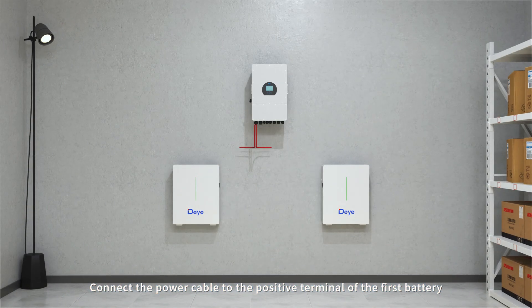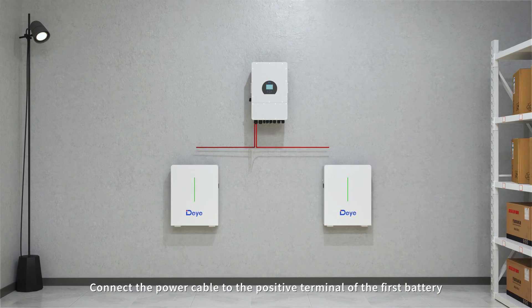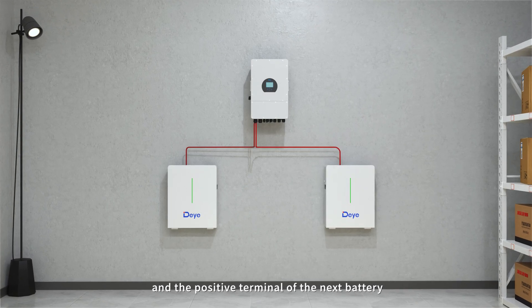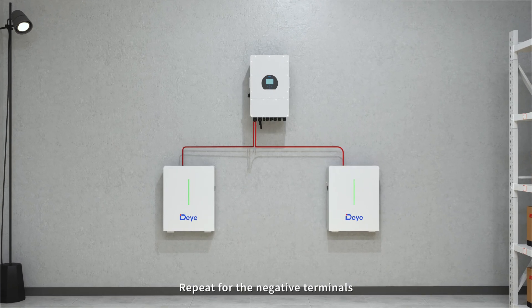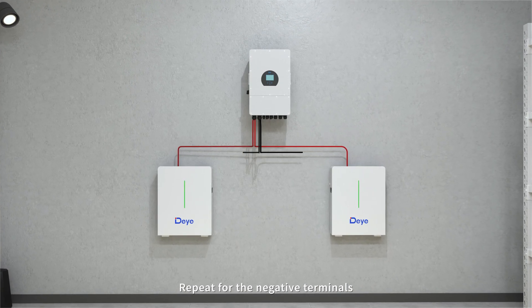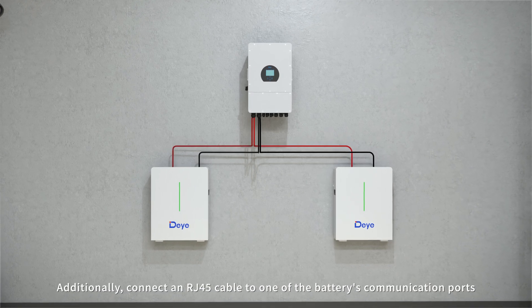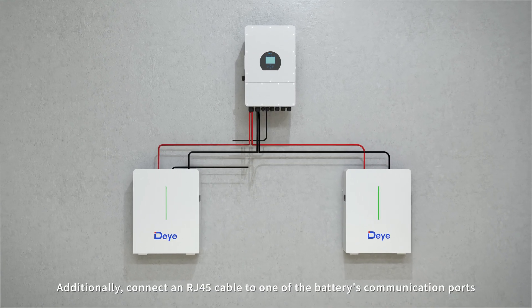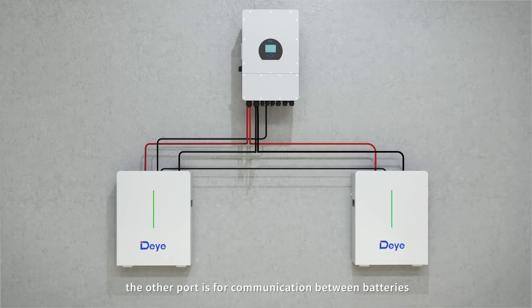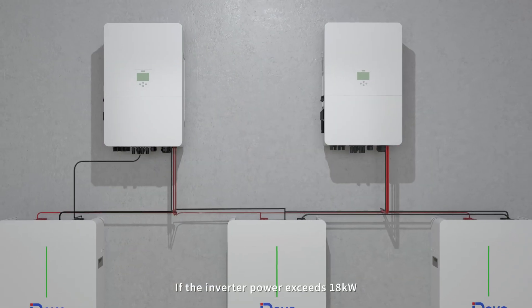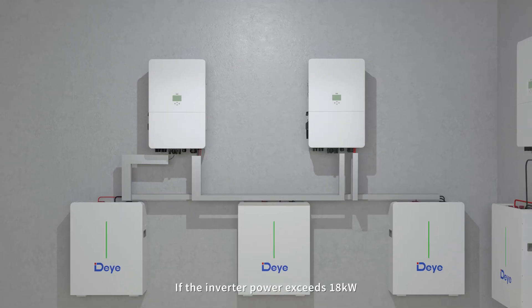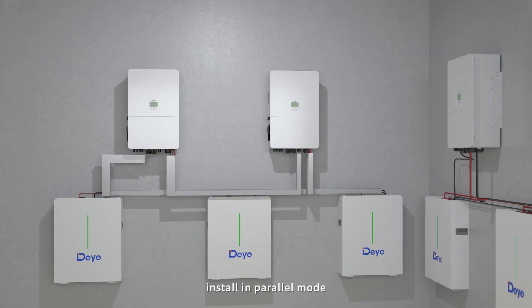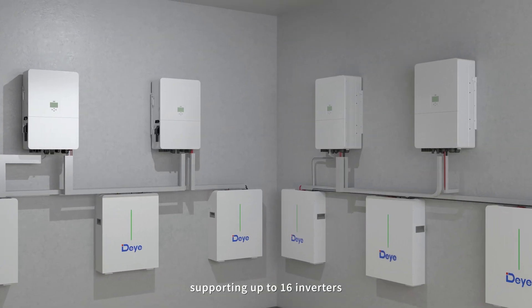Connect the power cable to the positive terminal of the first battery and the positive terminal of the next battery. Repeat for the negative terminals. Additionally, connect the RJ-45 cable to one of the battery's communication ports. The other port is for communication between batteries. If the inverter power exceeds 18 kilowatts, install in parallel mode supporting up to 16 inverters.